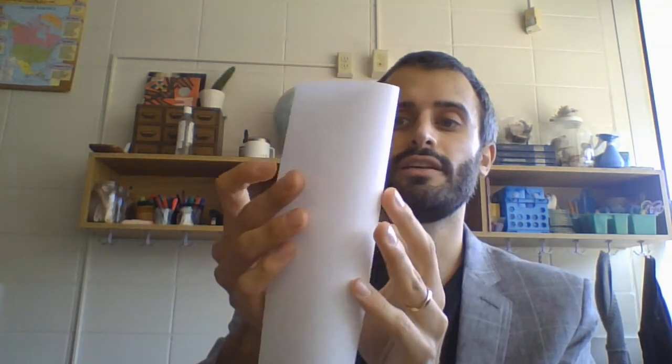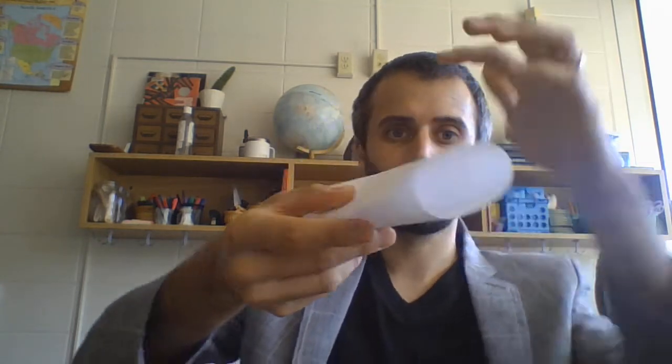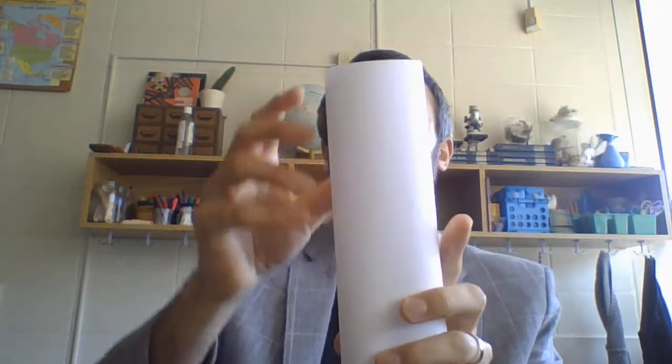You're going to fold it to create a tube, put a couple pieces of tape on it, and then you will have your own totem pole with your family represented on it.